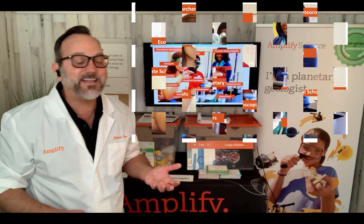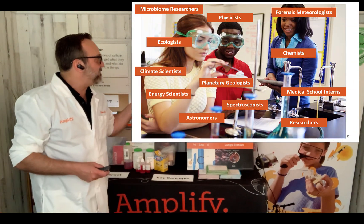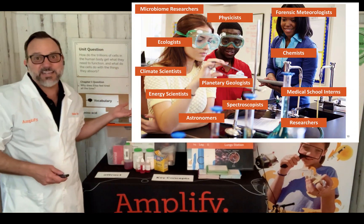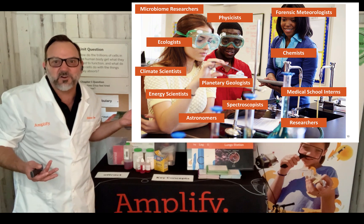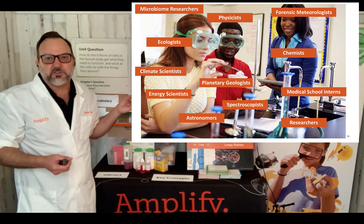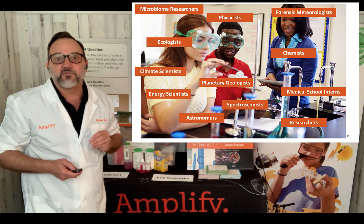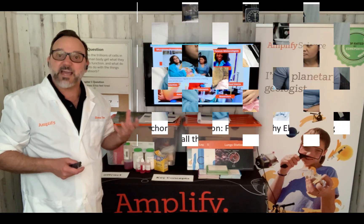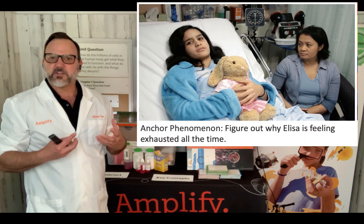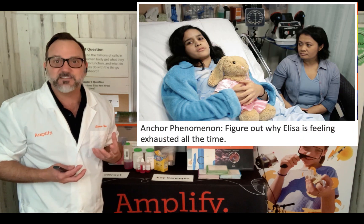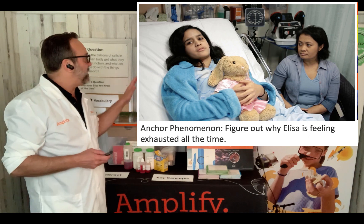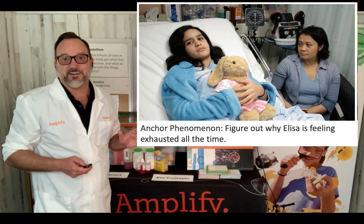It all ties to our amazing unit structure and phenomenon. With every unit, Amplify Science students get to take on amazing roles as scientists and engineers, such as forensic meteorologists, chemists, planetary geologists looking at the surface of Mars and how those channels form, or microbiome researchers looking at a fecal gut transplant. This experiment comes from our metabolism unit where students are learning about the processes of energy production in cells.